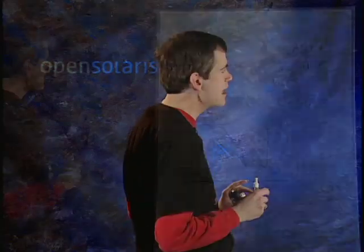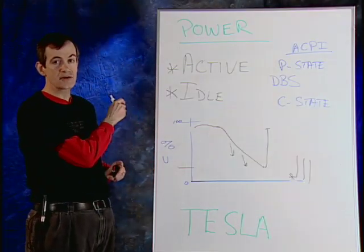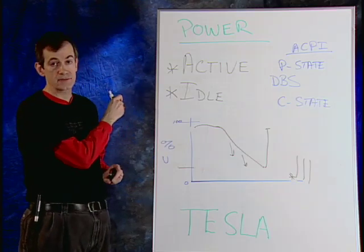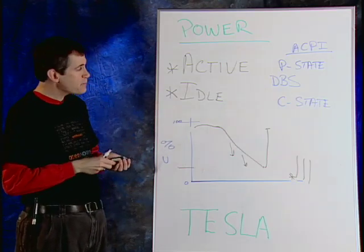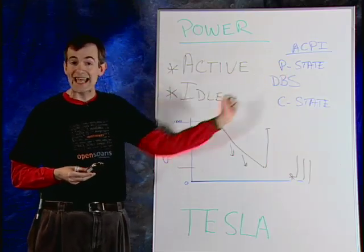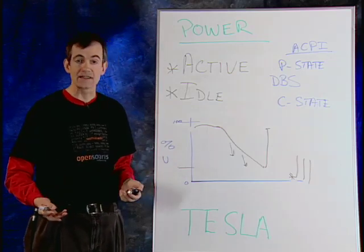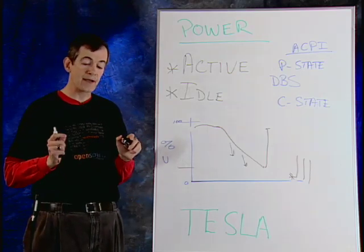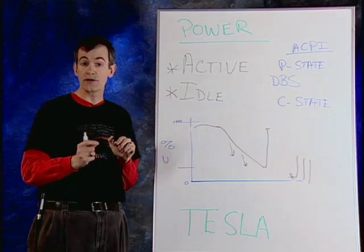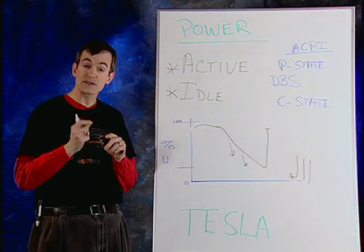In the area of power management, there are two main areas where we're doing a lot of development. One of them is in the area of active power management, and the other is in the area of idle power management. For active power management, this is where we refer to p-states. ACPI is actually a standard that defines the p-states, and we're actually able to change the level of power used based on which p-state the operating system puts the CPU.